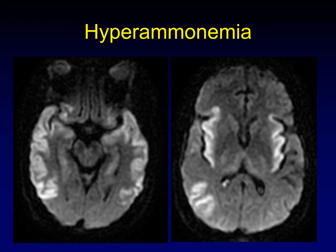This is hyperammonemia in a patient with liver failure. Notice that in hyperammonemia, it is a more symmetric distribution — not perfectly symmetric, but more symmetric — with involvement of the insula and the temporal lobes in this case. If you see a symmetric or mostly symmetric distribution, as opposed to the patchy distribution seen in most of the other diseases, hyperammonemia is a reasonable suggestion.